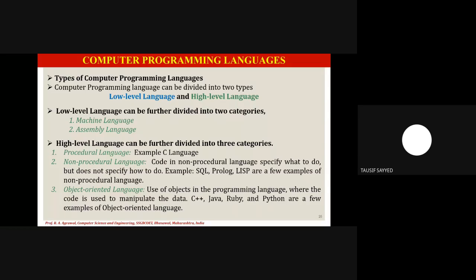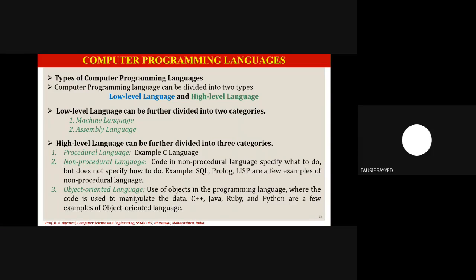Today's topic covers the different types of computer programming languages. Basically there are two types: the first is low-level language and the other is high-level language.